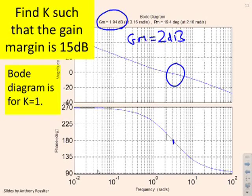So if I want 15 decibels, then what I'm saying is that minus 20 log to the base 10 of K is going to have to give me plus 13 decibels. I actually want to increase the margin by 13 decibels. But the change in the gain margin is minus 20 log to the base 10 of K. So I end up with this formula. So how do I solve that?